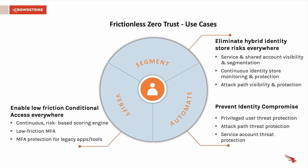The second key capability is the ability to automate. Whether it's privileged accounts, accounts with an attack path, or a service account, CrowdStrike Zero Trust provides protection against these accounts potentially acting maliciously. This can be achieved through alerting, triggering MFA to verify a user's identity, or blocking an authentication attempt outright.